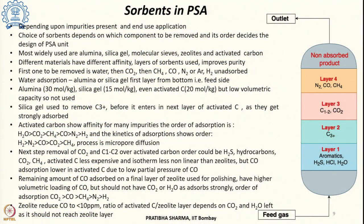Different materials used as adsorbents have different affinities towards impurities. Since a single material cannot remove all impurities, layers of different adsorbents are used. The sequence of impurity removal is: first water, then carbon dioxide, then methane, carbon monoxide, thereafter nitrogen and argon, and finally hydrogen remains unadsorbed and is collected.